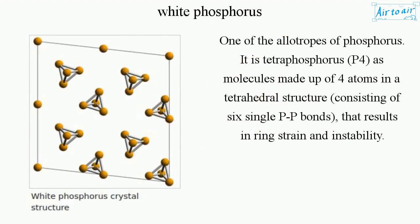White phosphorus is one of the allotropes of phosphorus. It is tetraphosphorus (P4), with molecules made up of four atoms in a tetrahedral structure, consisting of six single P–P bonds that result in ring strain and instability.